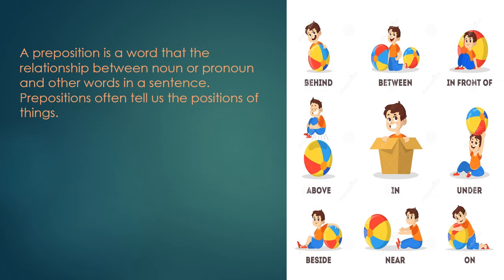First, we read: what is a preposition? A preposition is a word that shows the relationship between a noun or pronoun and other words in a sentence. Prepositions often tell us the position of things — behind, between, in front of, above, in, under, beside, near, on — these are all examples of prepositions.